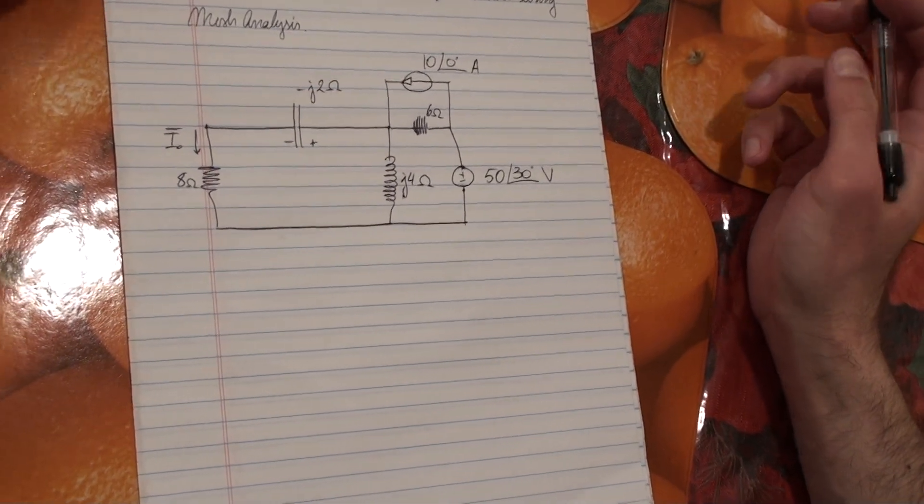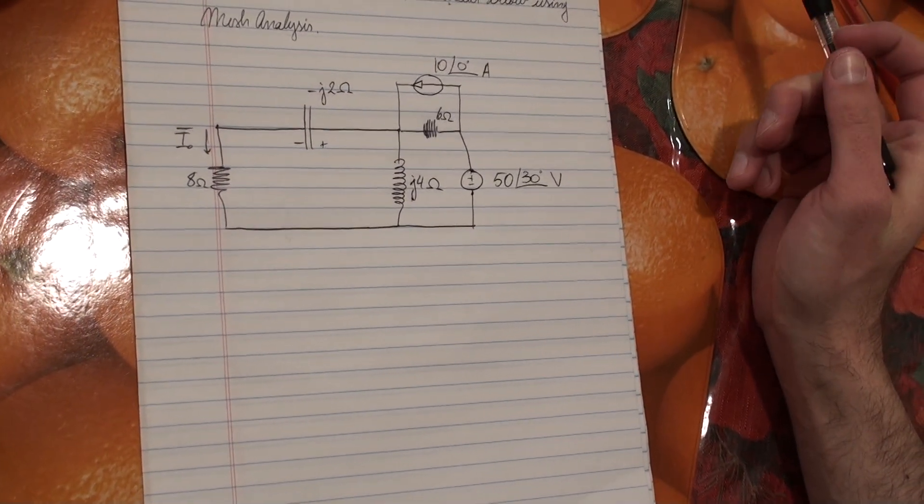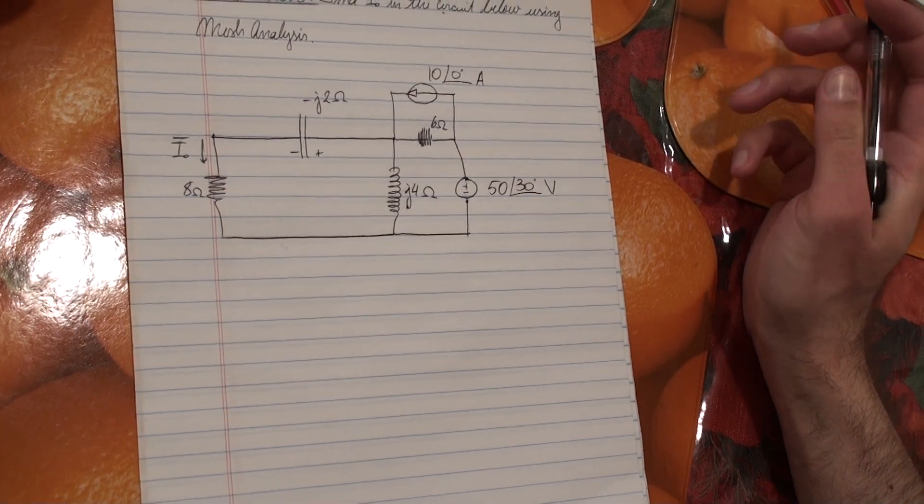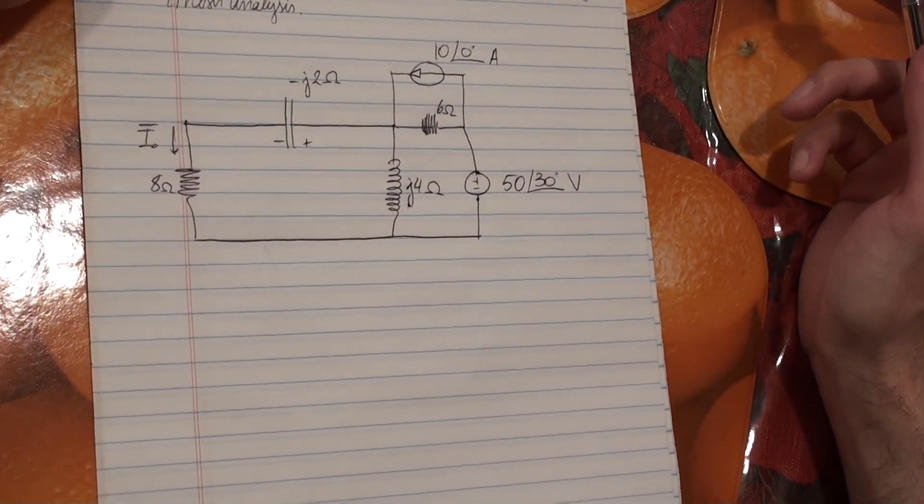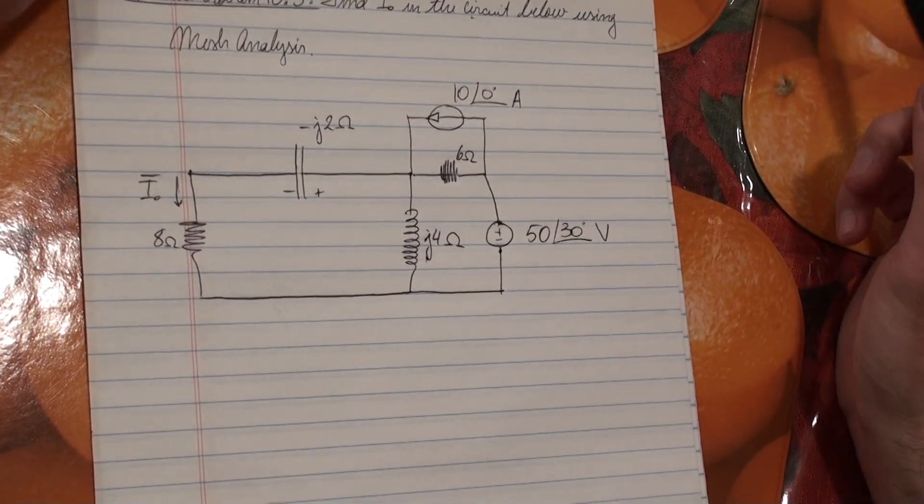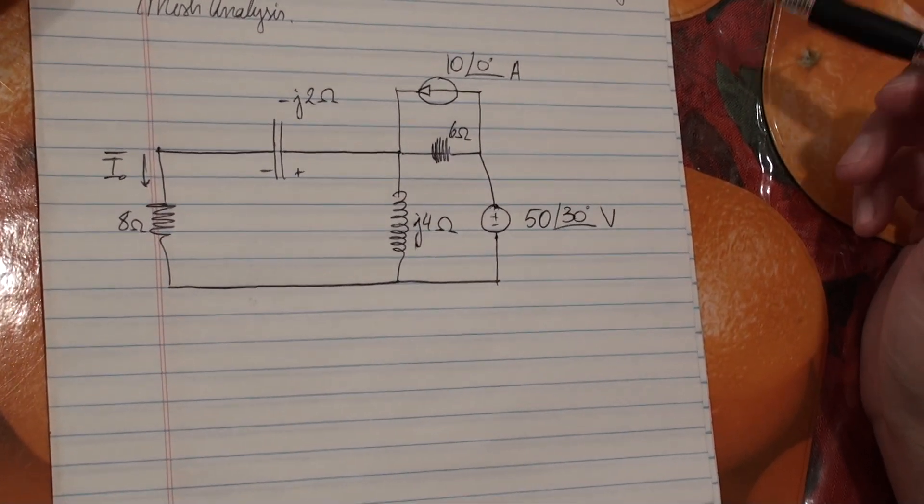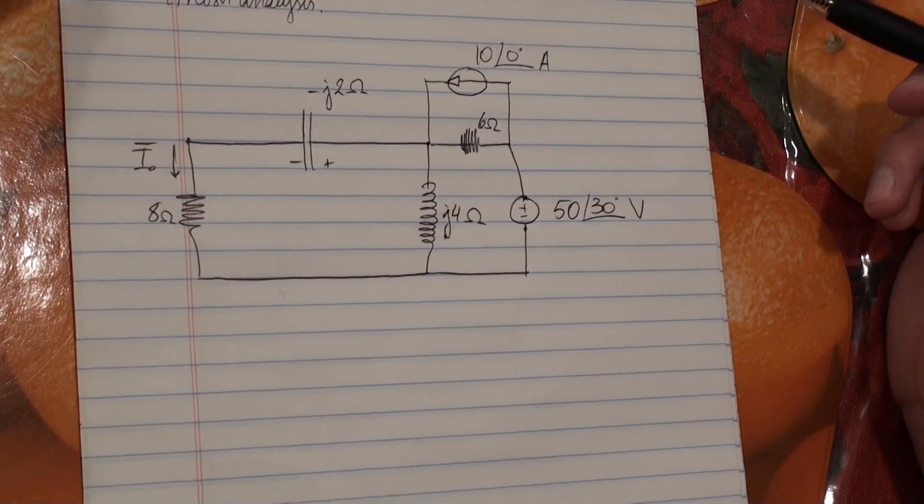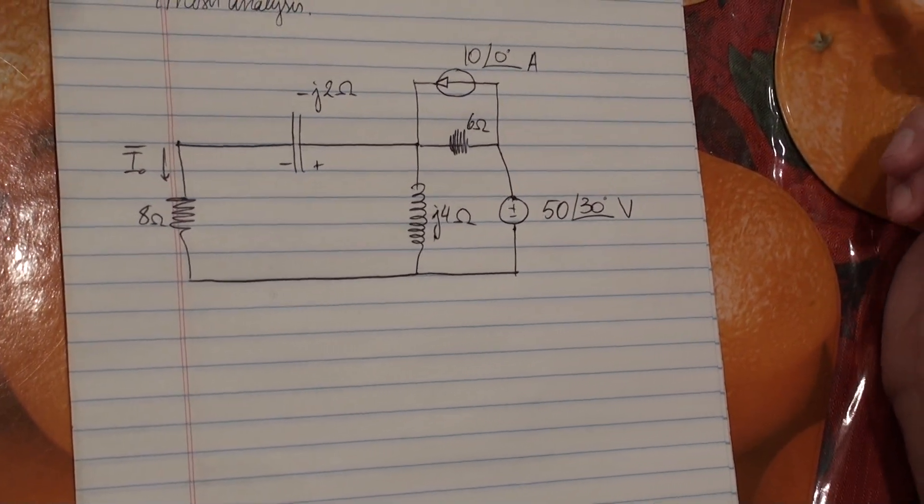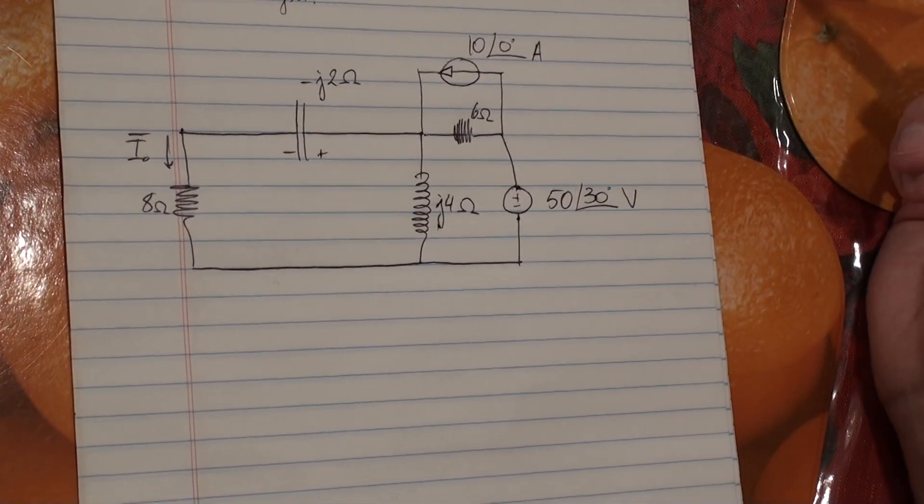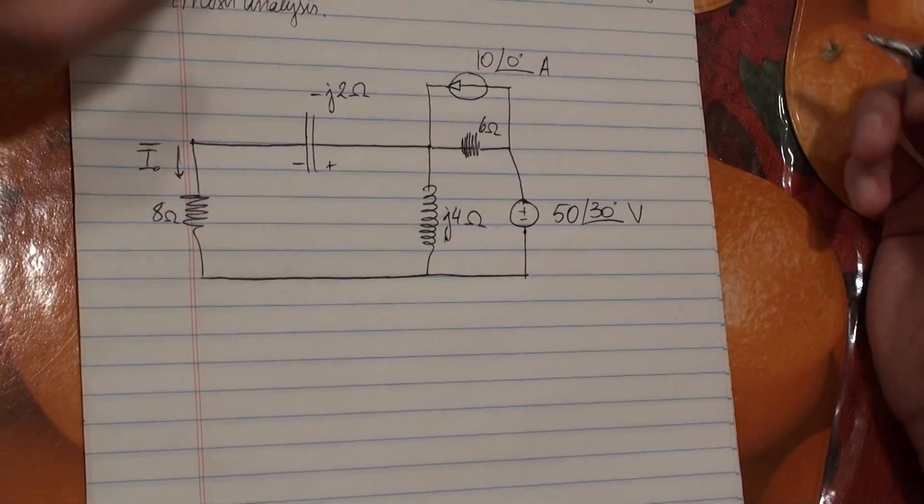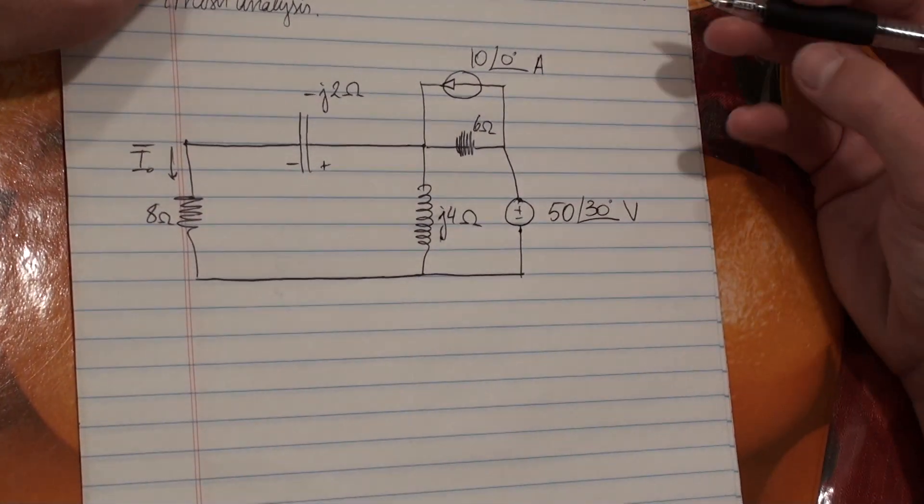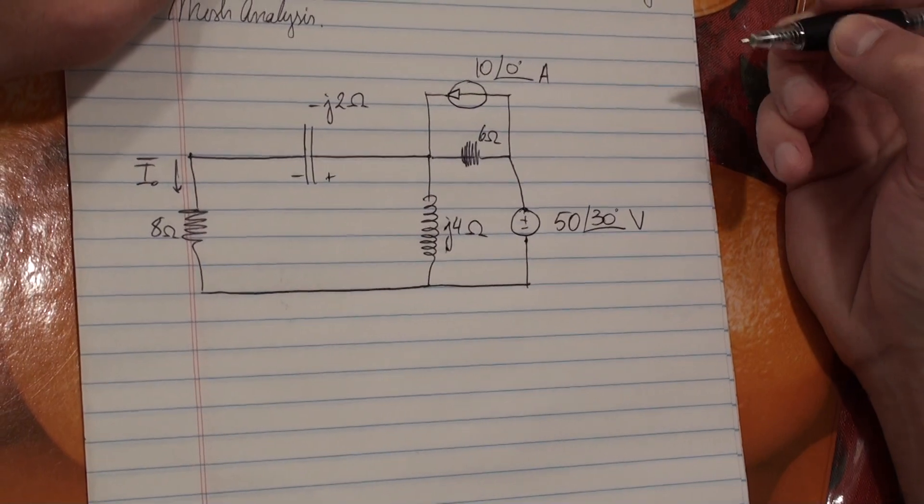So before we even start analyzing using mesh analysis, we notice that this circuit is not a well-behaved circuit for mesh analysis. Remember, for mesh analysis, we're applying KVL. So if we have voltage sources, it's good. But if we have a current source, then it's not well-behaved, and so we have to write a constraint equation.